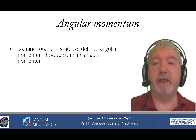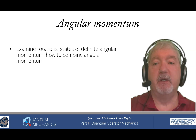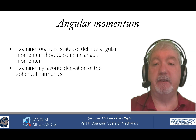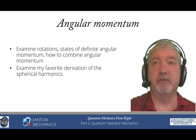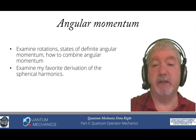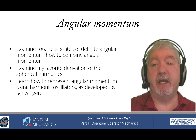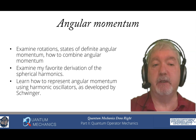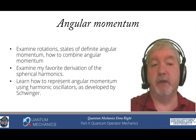Then we have a chapter on angular momentum. We examine rotations, define states of definite angular momentum, discuss how you can combine angular momentum, and examine one of my favorite things in this book: the derivation worked out with Mark Weitzman on spherical harmonics — a really cool way to do the derivation that helps you understand what spherical harmonics actually are. We then learn how to represent angular momentum using harmonic oscillators, a really cool idea developed by Julian Schwinger, the same Julian Schwinger who co-invented quantum electrodynamics.